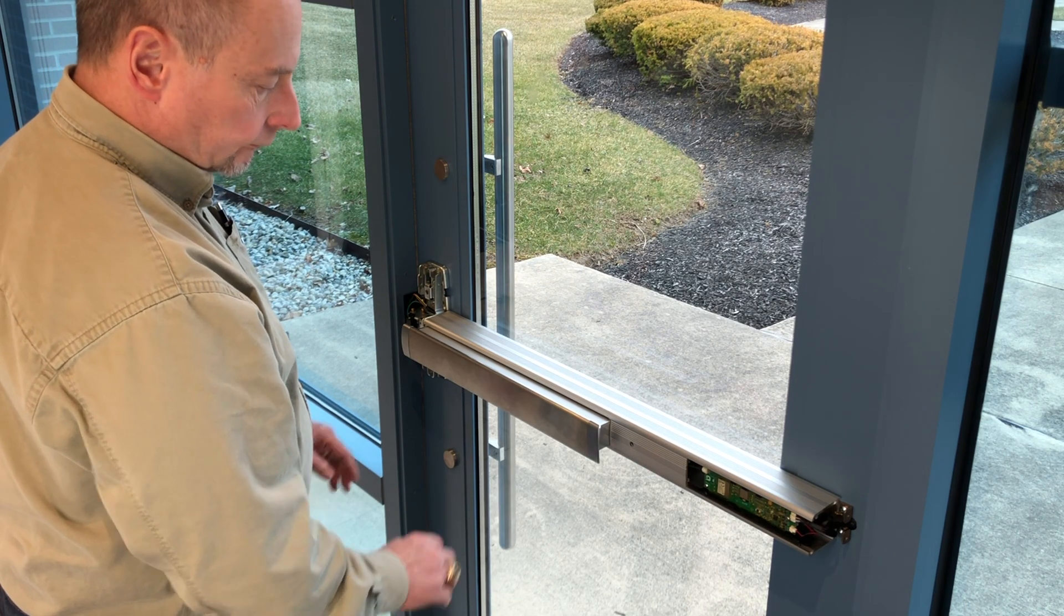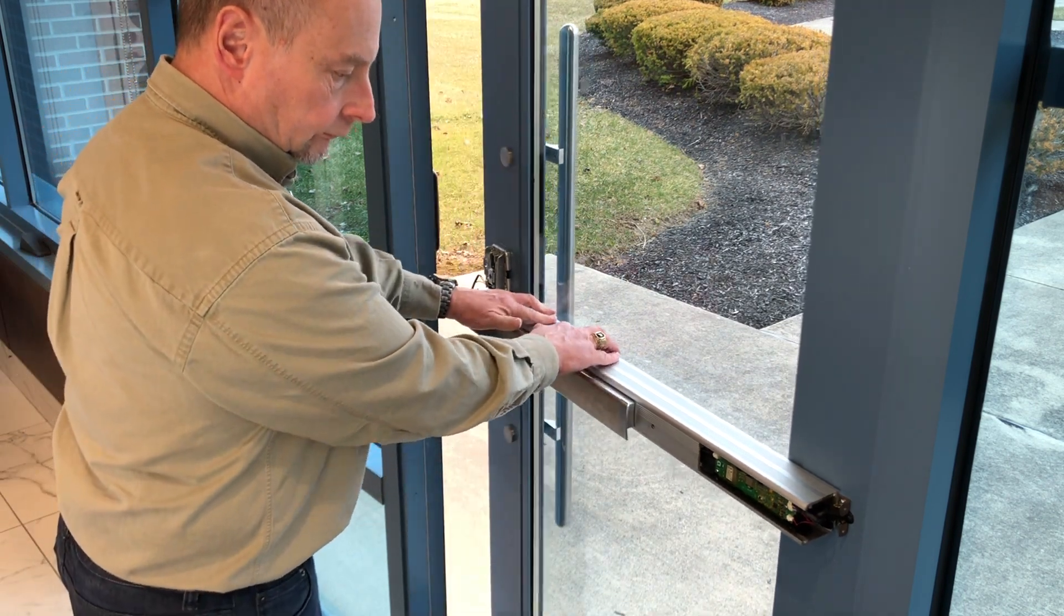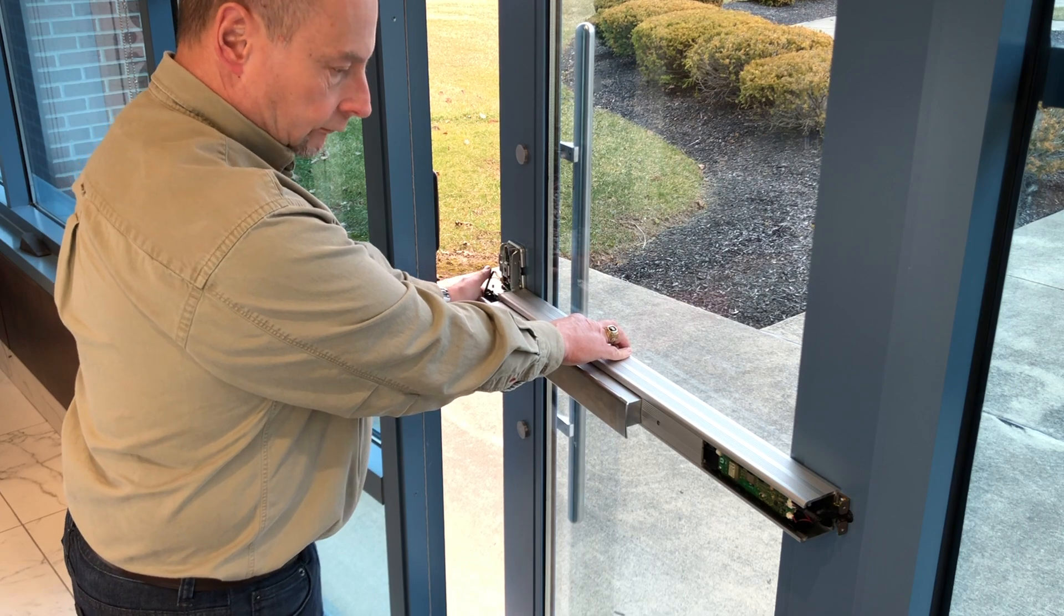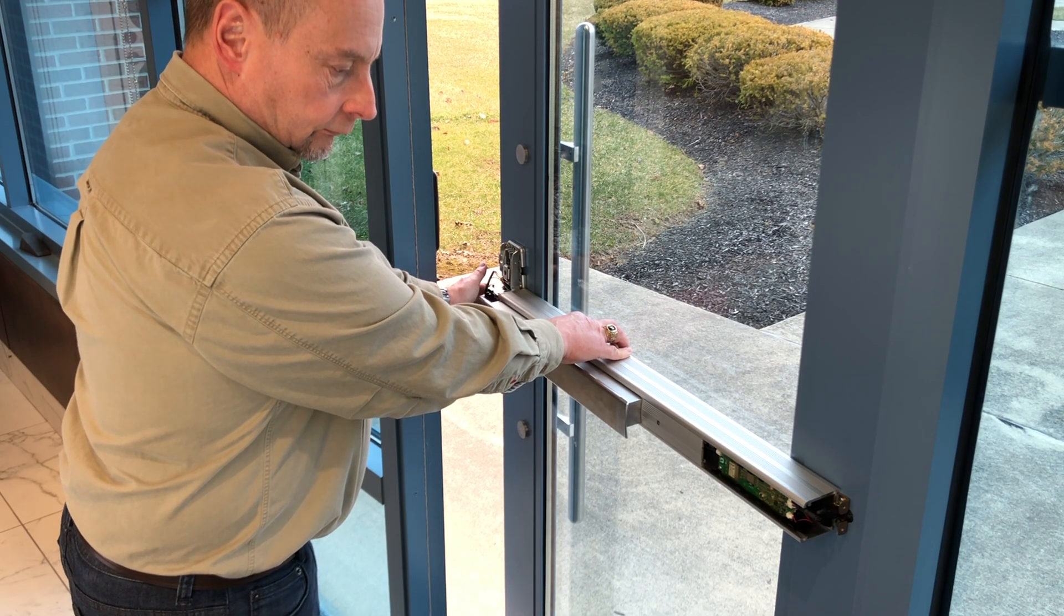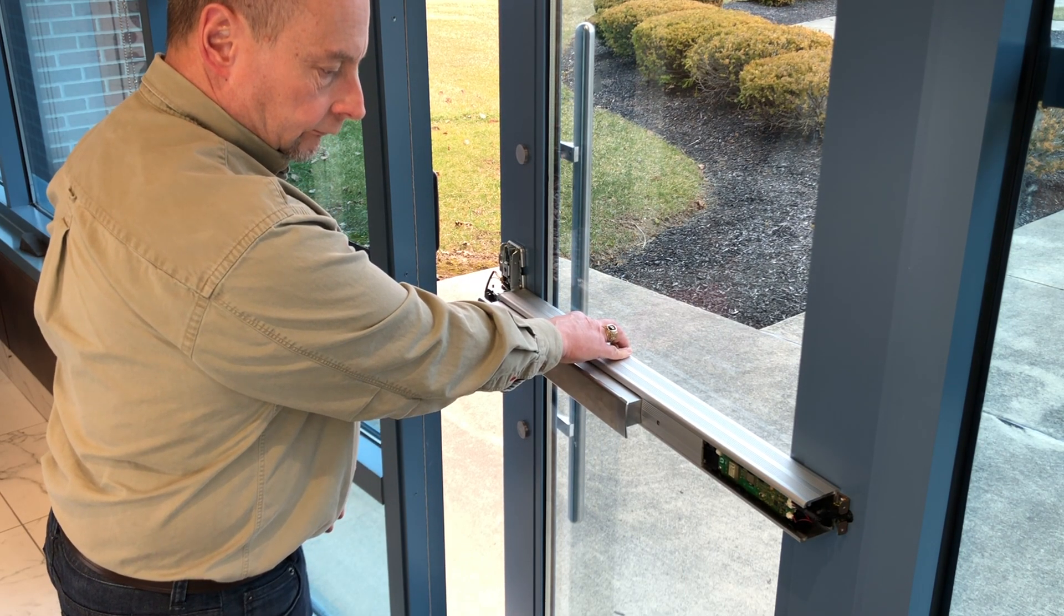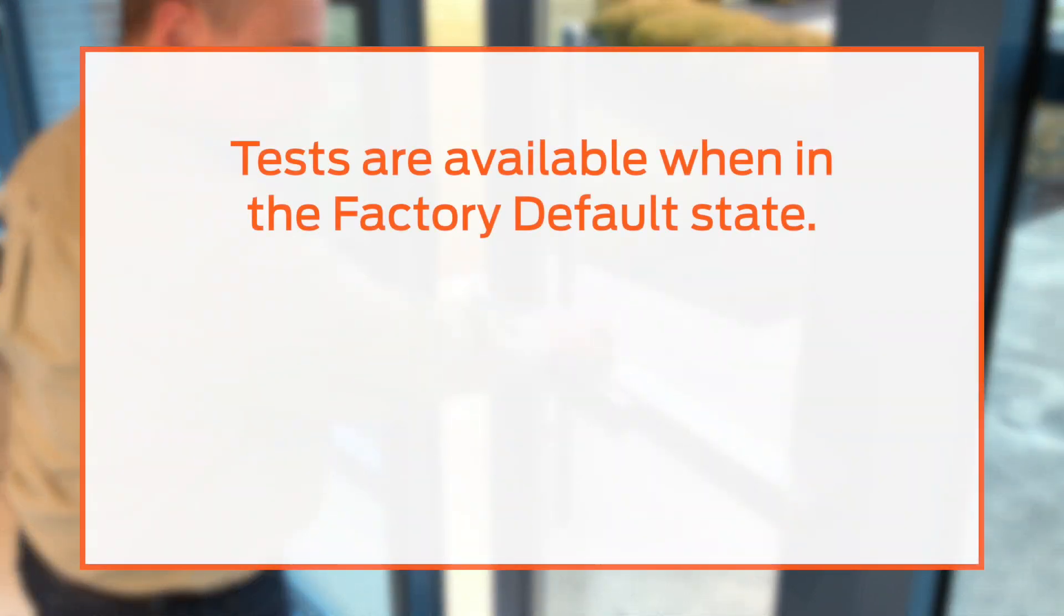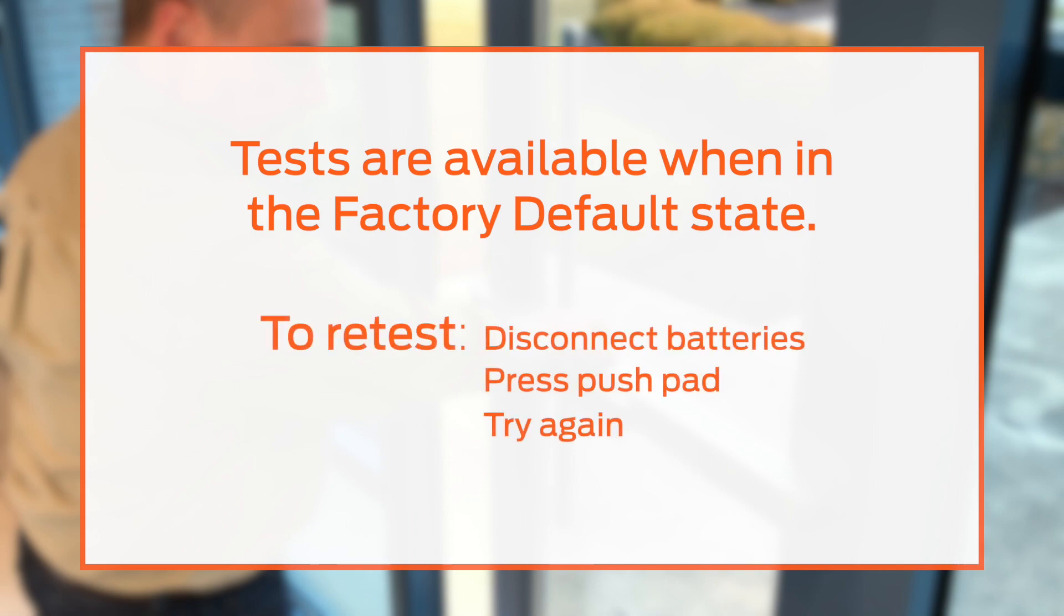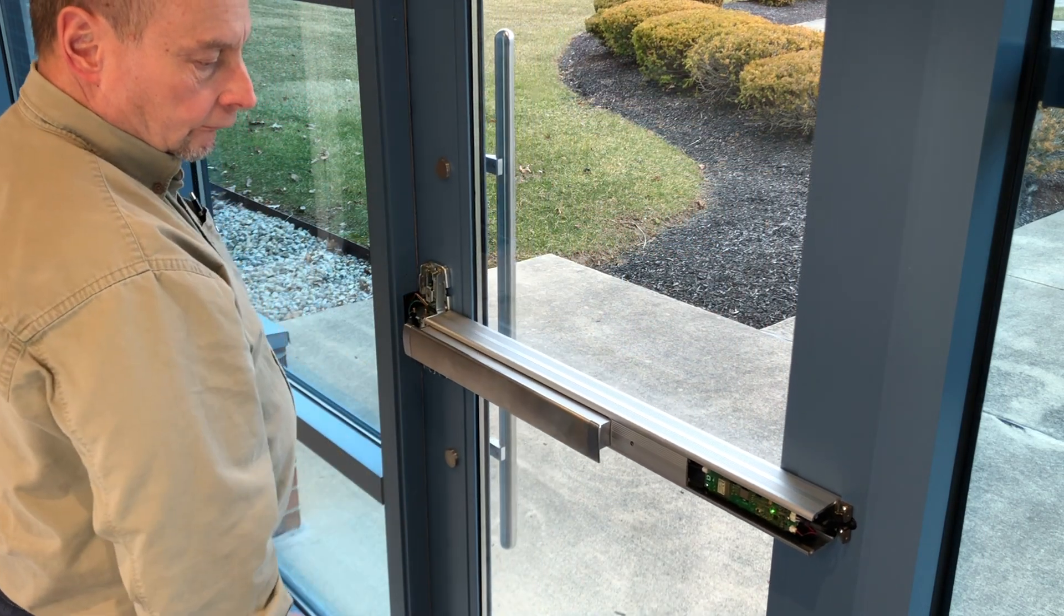To test the LX switch, press and hold the latch and confirm the light flashes green. Release the latch and confirm another green flash. Please note that these tests are only available when the module is in a factory default state. If any tests do not work, disconnect the batteries, press the pushpad to fully discharge the module, and try the tests again. See the installation instructions for more information.